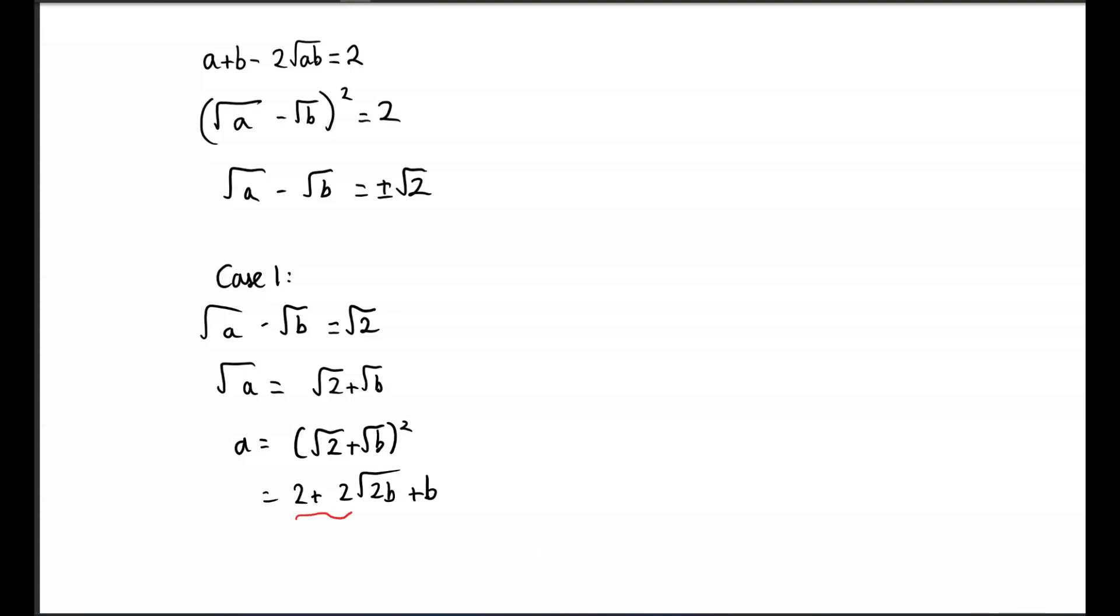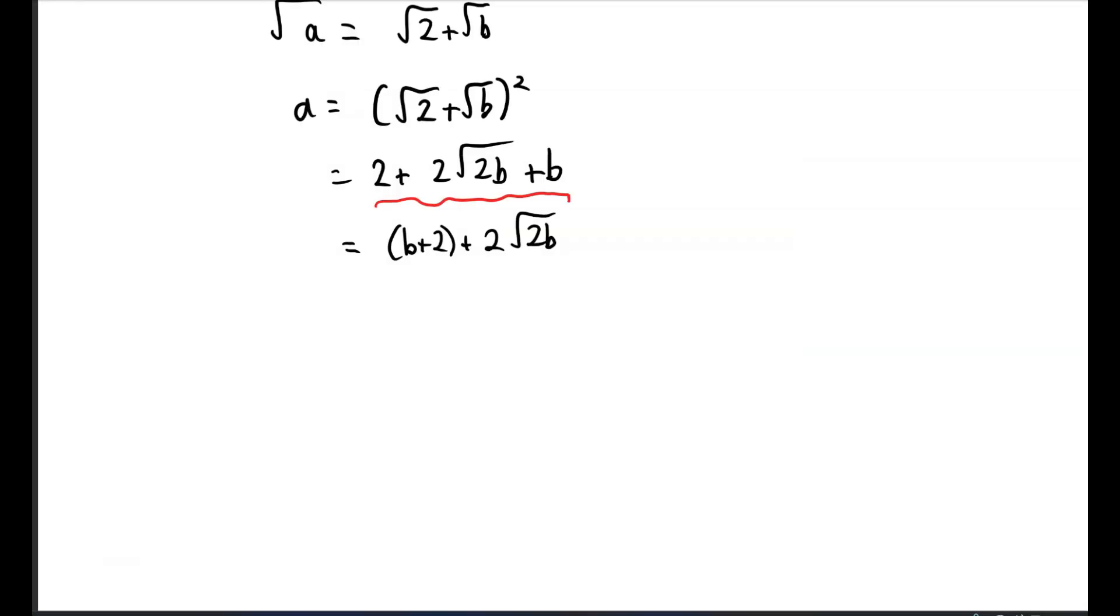We want a to be an integer, so this expression has to be an integer. If we write it as b + 2 + 2√(2b), clearly b + 2 is going to be an integer. So we require that 2√(2b) is an integer.